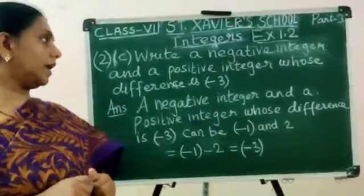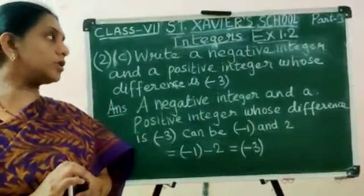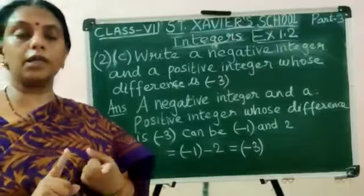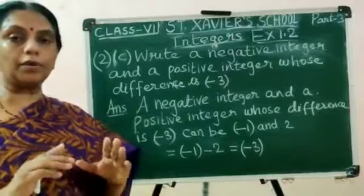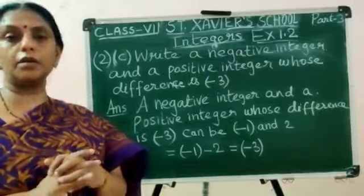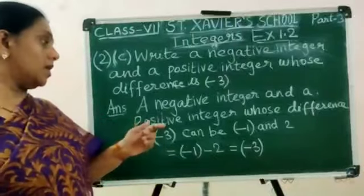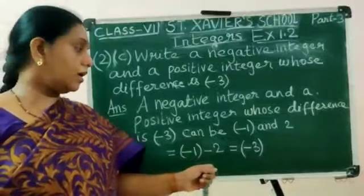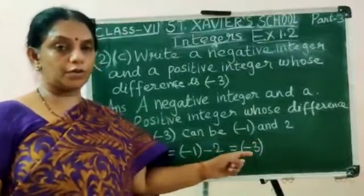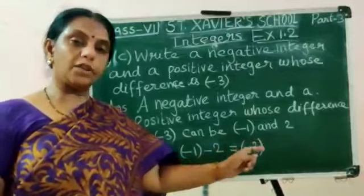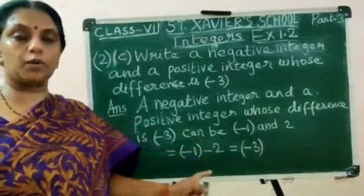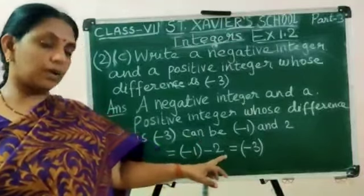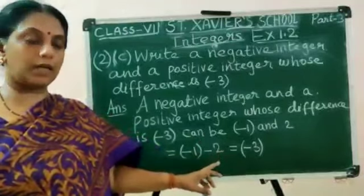Write a negative integer and a positive integer whose difference is minus 3. One is negative, the other positive, with a subtraction symbol between them. A pair can be minus 1 and plus 2. Minus 1 minus 2: minus and minus becomes plus — wait, 2 plus 1 is 3, the bigger number is 2 and the symbol before is minus. Therefore, minus 3.